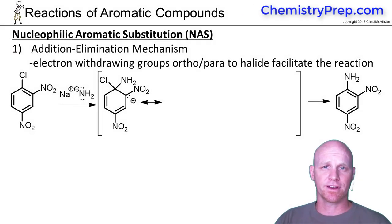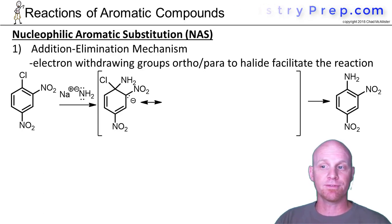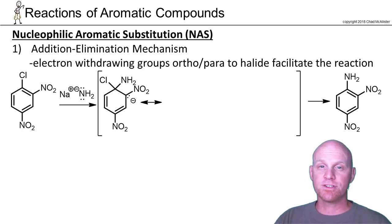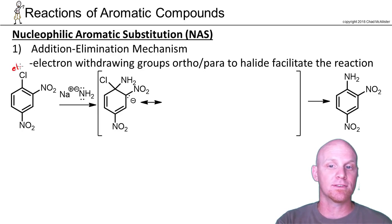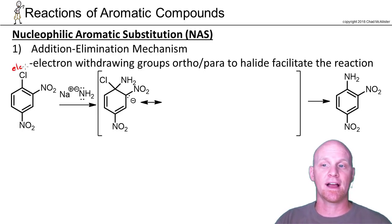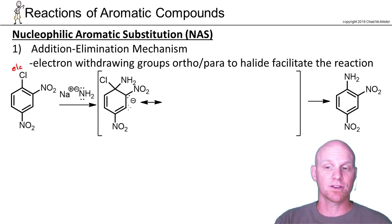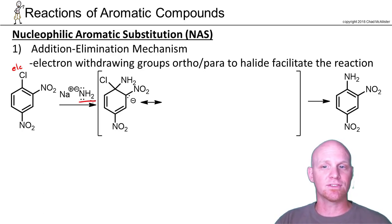We spend a lot of time on electrophilic aromatic substitution, but we're going to spend comparatively less time on nucleophilic aromatic substitution, NAS for short. In this case we're going to be replacing a halogen rather than a hydrogen — that's our leaving group — and we're going to be replacing it with a nucleophile instead of an electrophile. Since we're reacting benzene with a nucleophile, keep in mind that benzene is the electrophile in this reaction. Benzene is not very reactive either way, so if you're going to react it with a nucleophile, you better make it a strong nucleophile. Here the amide ion is exceptionally strong — a great nucleophile for this example.